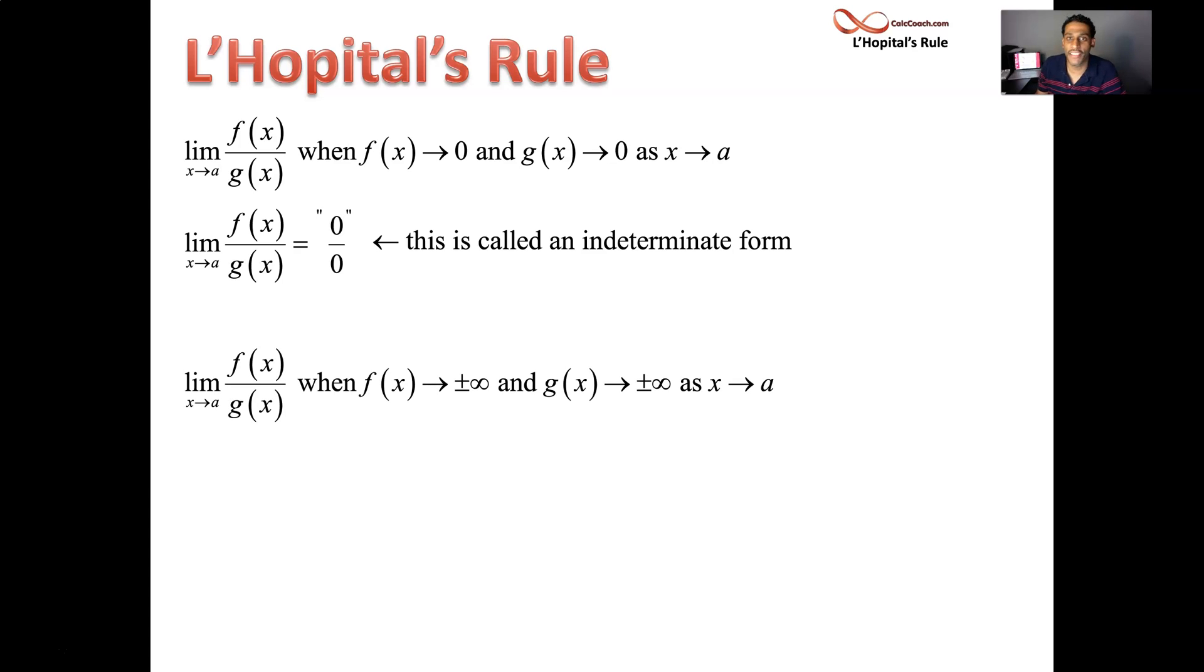Or perhaps the numerator and denominator are both headed to infinity as x heads towards a. And a can even be infinity itself or minus infinity. And so L'Hôpital's Rule is built exactly for these two cases. 0 over 0 indeterminate form. Infinity over infinity indeterminate form, plus or minus.